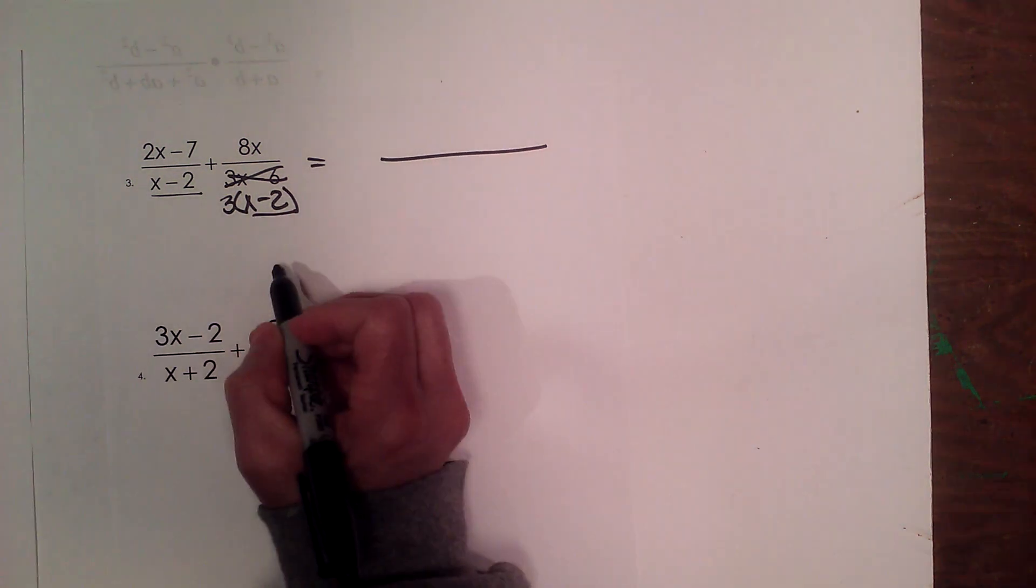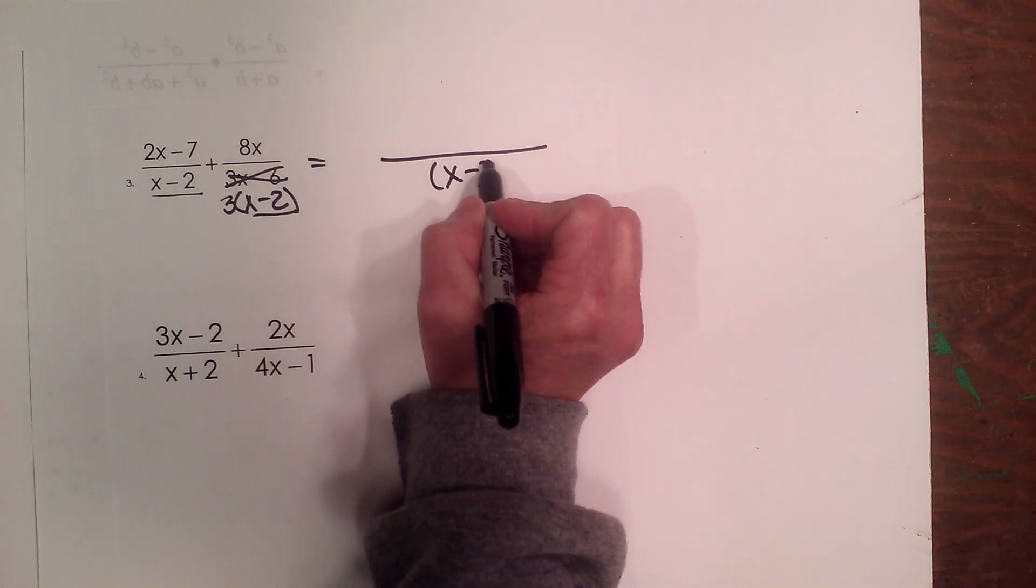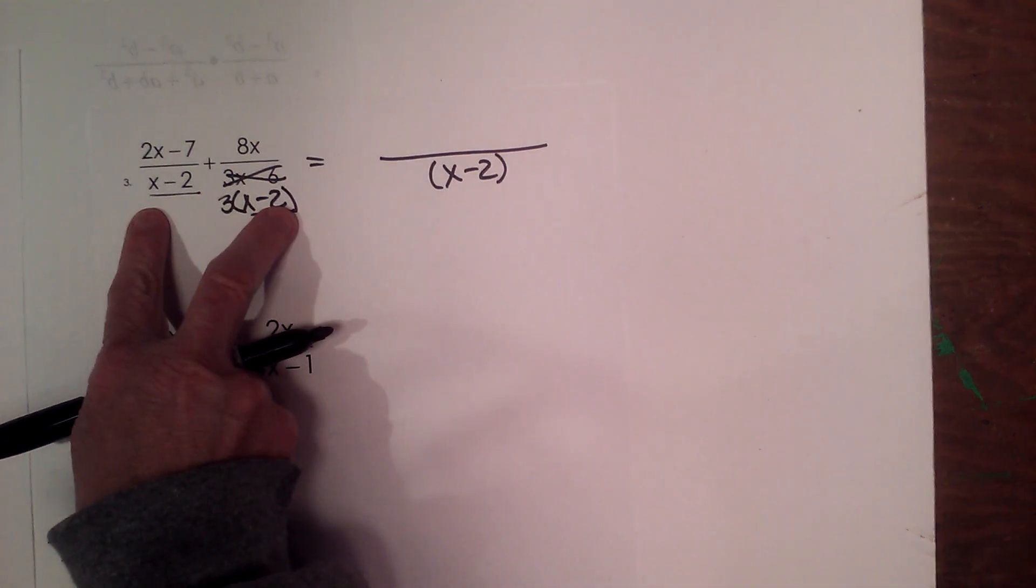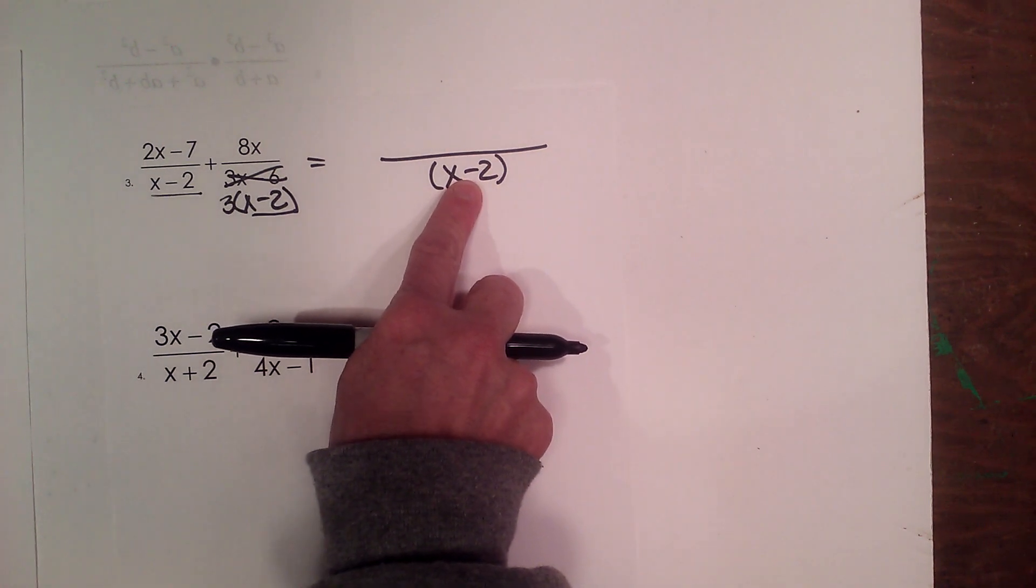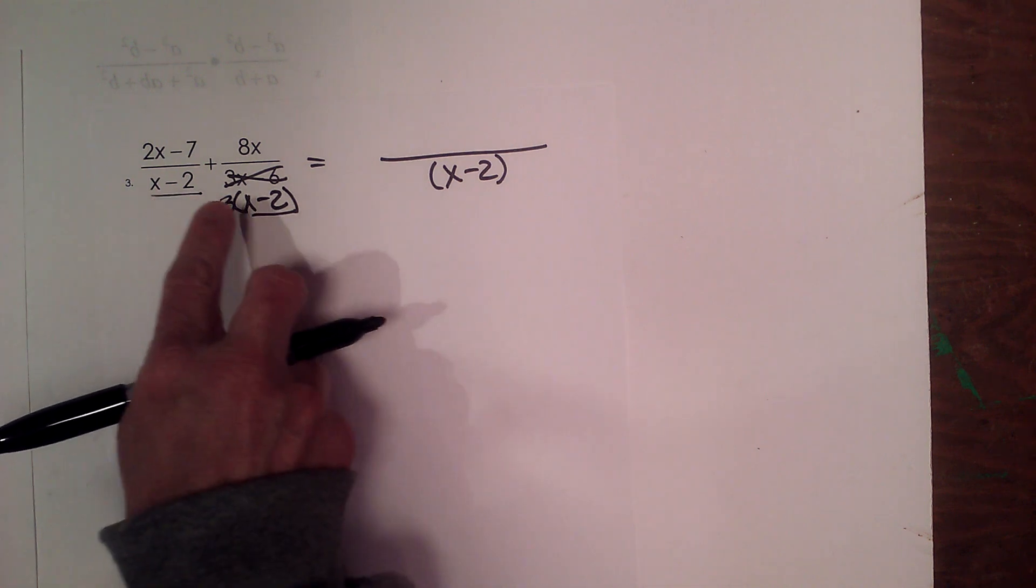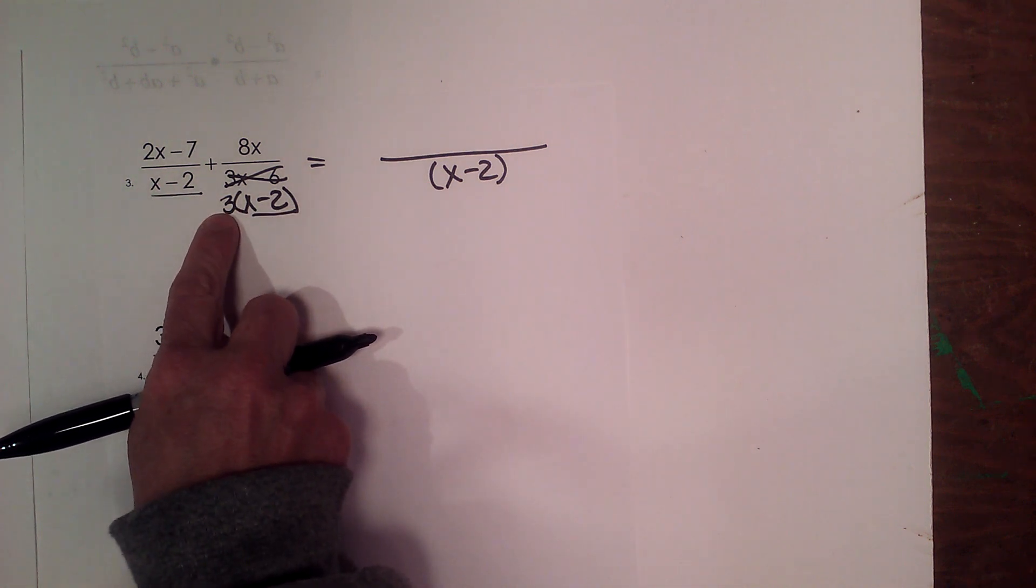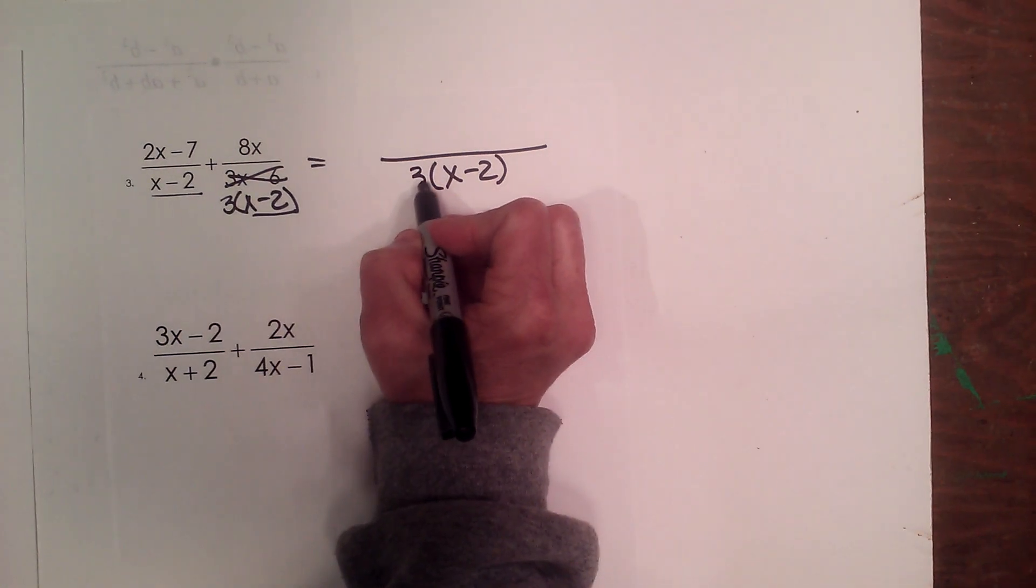So what I'm going to do is write my common denominator over here. I know I have an x minus 2 as one of my factors, so I write it over here as my common denominator. Now when I write that it represents both of these. Now the other factor I have that's not common to both is 3, so I know I have to have that in my denominator.